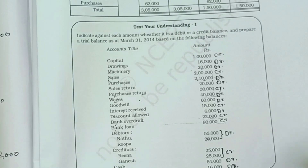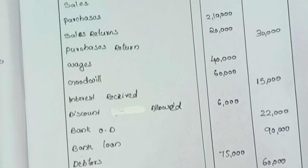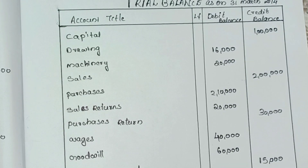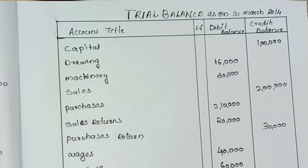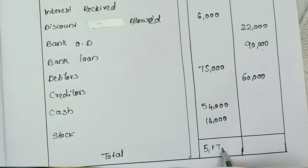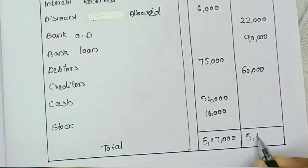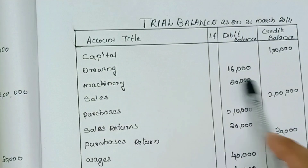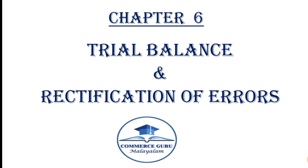Creditors - 35,000 plus 25,000 = 60,000, credit. Stock - 16,000, debit. After adding all items, the debit column total equals the credit column total at 5,17,000. The detailed solution will be continued in the next class.